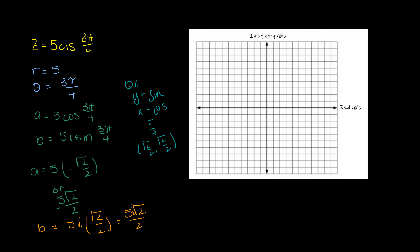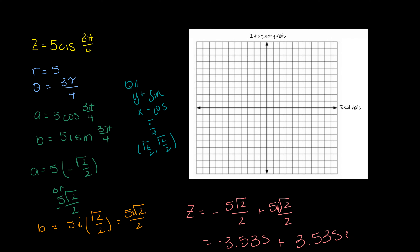Now we can express this in the coordinate plane. The equation in rectangular form is going to be negative 5√2/2 plus 5√2/2 · i. As a decimal estimate, that's 5 times 0.707, which is approximately 3.535, so the rectangular form is roughly −3.535 + 3.535i.